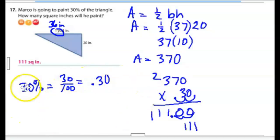Now I have to figure out what 30% of that is. 30% is equivalent to 30 over 100. The word cent means 100 per cent. 30 out of 100. So like 30 pennies out of 100 pennies for a dollar. You can also write that as 30 hundredths, which is the same as like 30 cents. I multiply 370 times the 30 hundredths. I get 11,100. Move the decimal twice. I have 111 square inches is my answer.